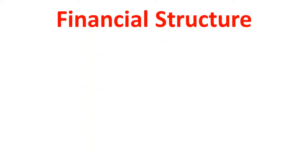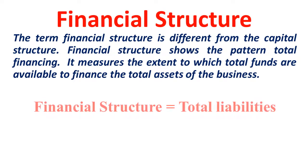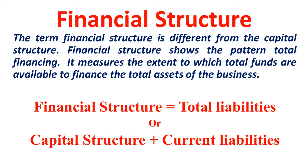Most students get confused between capital structure and financial structure, so we must understand the difference. Financial structure refers to total liabilities — all the liabilities of the company. Capital structure refers to only the long-term sources of finance. Financial structure is also inclusive of capital structure. Therefore: Financial Structure = Capital Structure + Current Liabilities. Current liabilities are not included in capital structure. Please don't get confused.